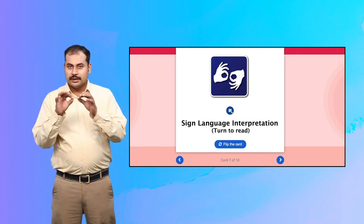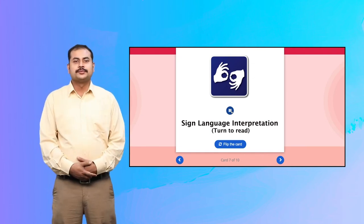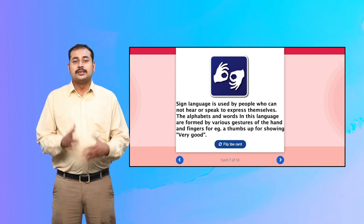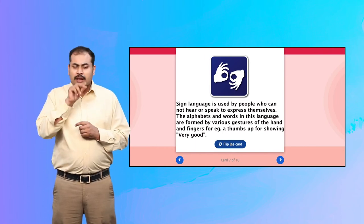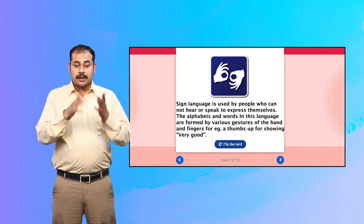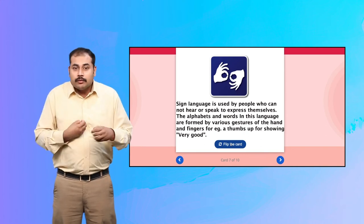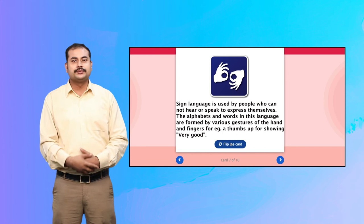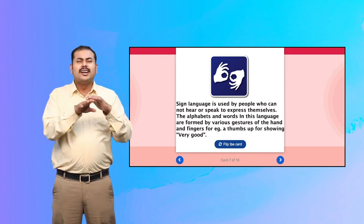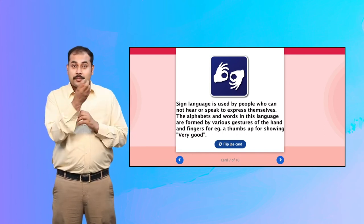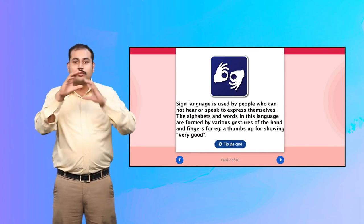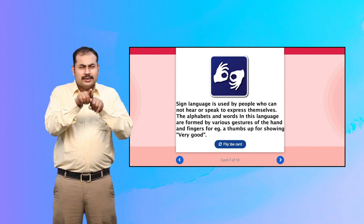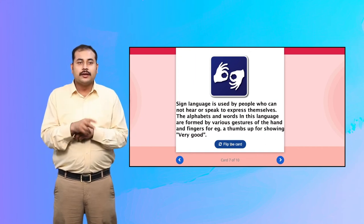Sign Language Interpretation. Sign language is used by people who cannot hear or speak to express themselves. The alphabets, numbers and words in this language are formed by various gestures of the hand and fingers. For example, a thumbs up for showing very good.